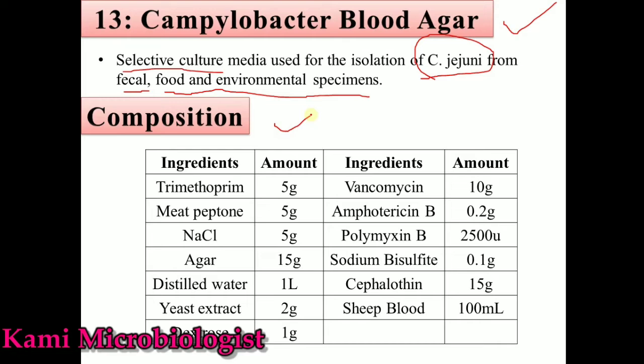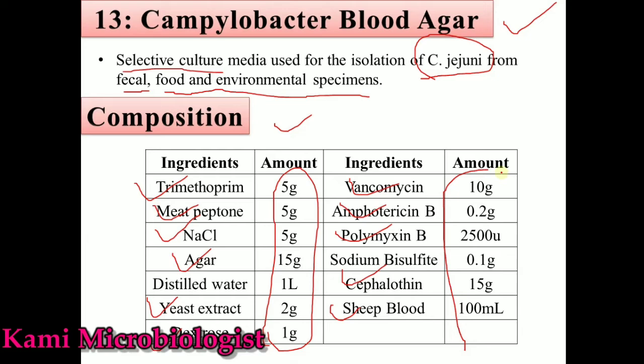Now let's talk about the composition of this medium. This medium contains different types of antibiotics like trimethoprim, vancomycin, Amphotericin B, Polymyxin B, and Cephalothin. In addition, we have meat peptone, NaCl, agar, yeast extract, dextrose, and sheep blood. These amounts shown are for one liter of the medium — mix all these ingredients in one liter and the agar will be prepared.